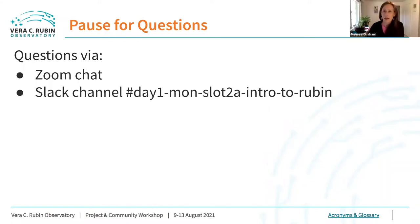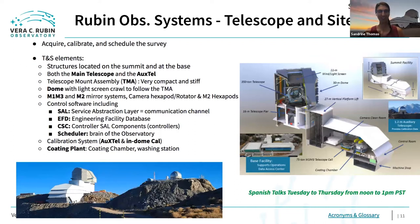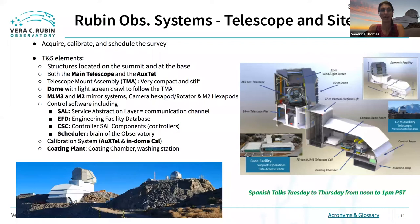Let's keep going with our systems overview. I'm Sandrine Thomas, the telescope and site scientist. Our subsystem is responsible for acquiring, calibrating, and scheduling the survey. We have a structure at the summit — most of what we highlight — and also the base facility in La Serena, where we had to increase the number of offices to accommodate Rubin staff. At the summit we have two telescopes: the main telescope and the calibration telescope, AuxTel.